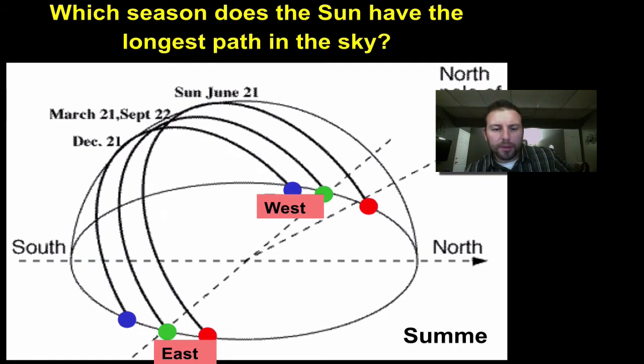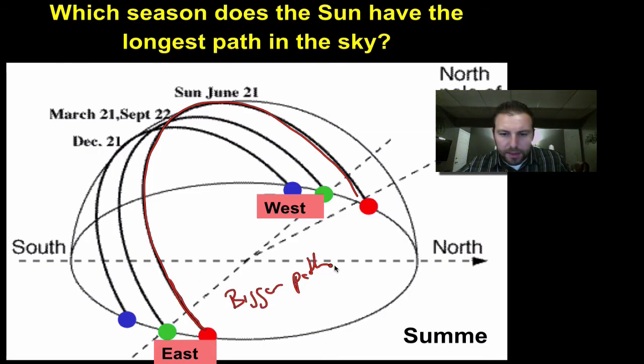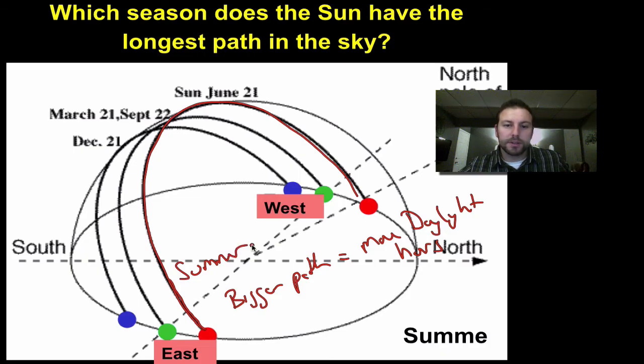Remember, the time that the sun is in the sky equates to the season that it is. So if we look at this red path, we can see that it's a pretty big path compared to maybe this blue one. The bigger the path equals more daylight hours. The more daylight hours we have means that most likely we're going into a longer summer season. So this red one is our summer season. Also, it's June 21st, kind of a little bit of a giveaway there.